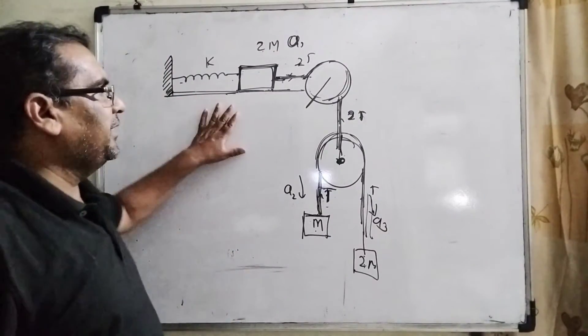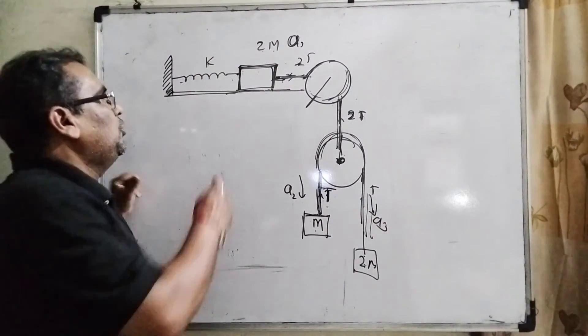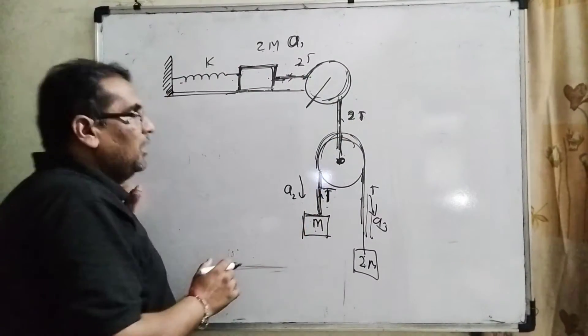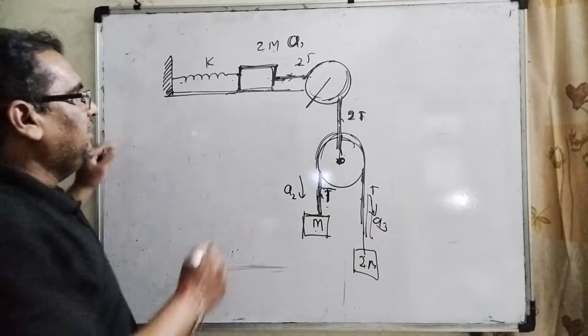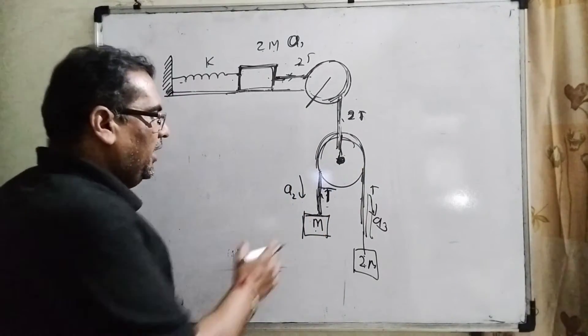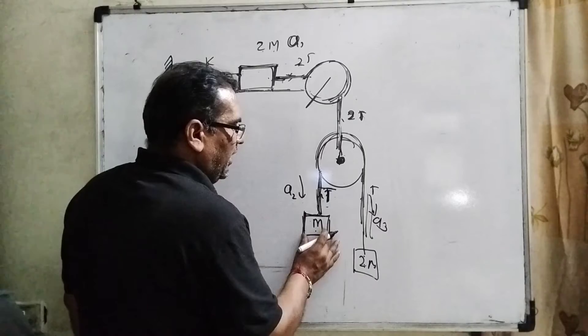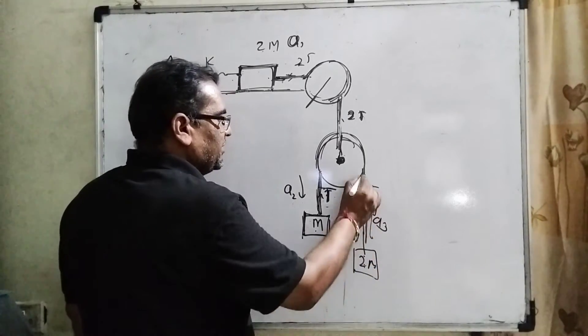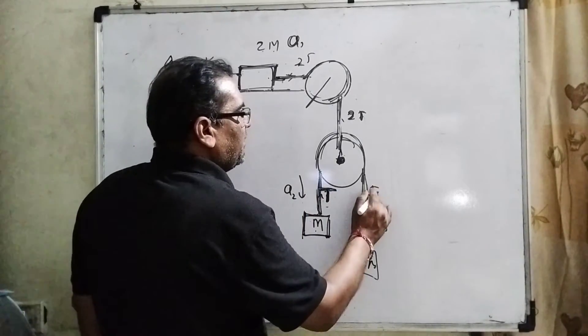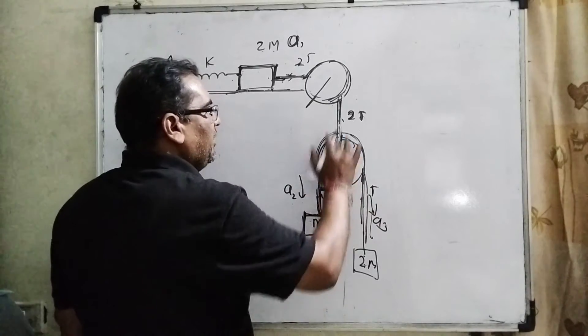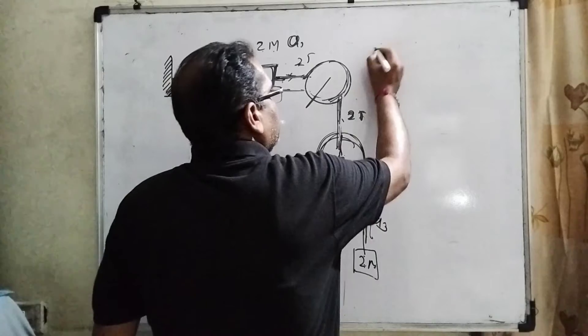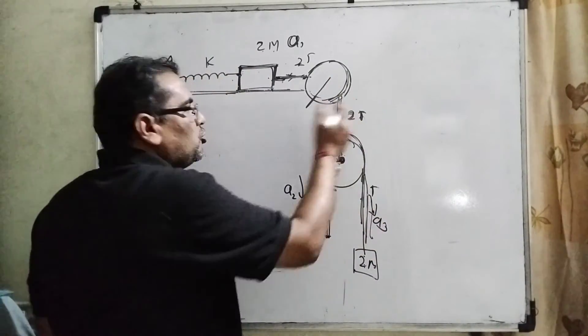Now, as per the given diagram, we can see that the 2m block is connected, one end with the spring, another with the string. Spring constant is k and this string passing over the first pulley and then it is connected with the second pulley. Here two masses are hanging, m and 2m, which are connected with string and passing over this second pulley. We can see that here the tension is applied in the upward direction. This is T, T, now it becomes 2T.